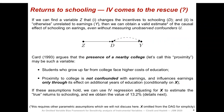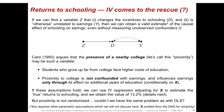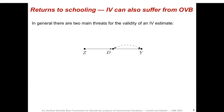If we believe these assumptions hold — and that's a big if — we can use IV regression, adjusting for X, to estimate the true returns to schooling and will obtain the value of 13.2%. But proximity to college is not randomized, so couldn't we have the same problem as with OLS? And the answer here is yes.